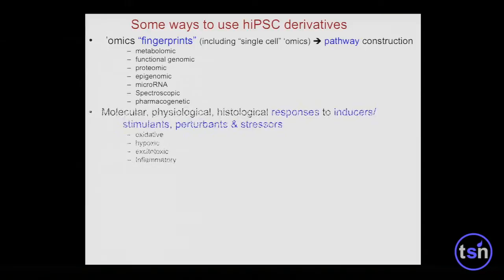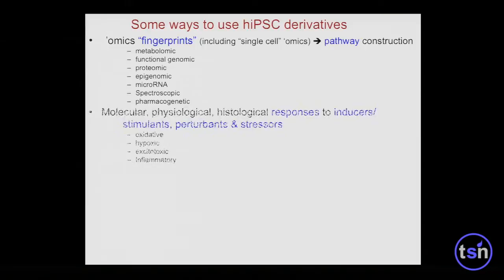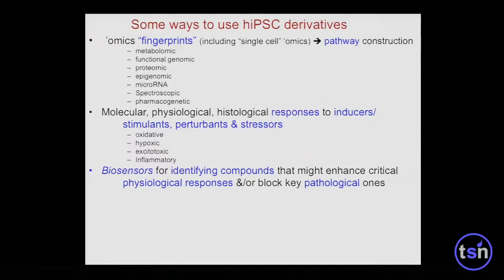Ways that people use derivatives of IPS cells include omics to find fingerprints, subjecting cells to stressors to understand pathway analysis, turning them into biosensors to screen compounds for therapeutic responses, candidate gene testing, and efficient gene editing. Correlating these with clinical outcomes and doing bioinformatic analysis to get panels of biomarkers might ultimately get us to personalized medicine.